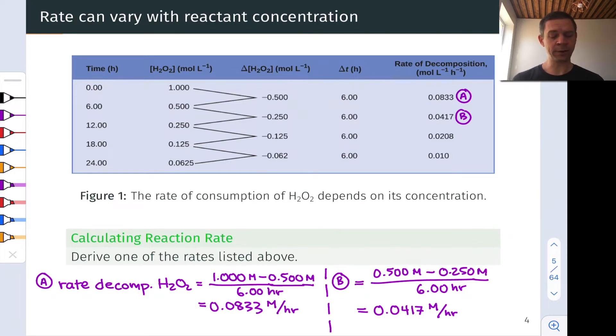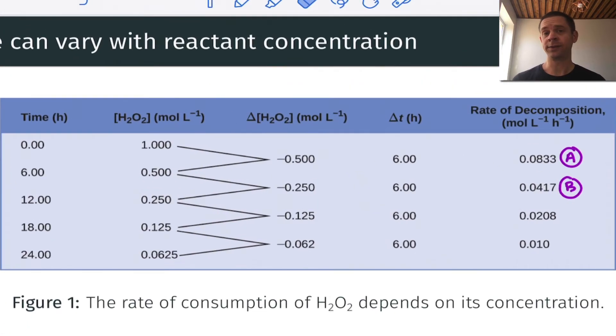So here, for example, if we look at the first row of this table, the rate is highest when the concentration of H2O2 is greatest. And as that concentration of H2O2 decreases, the rate decreases.